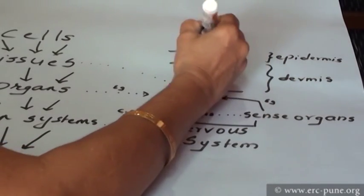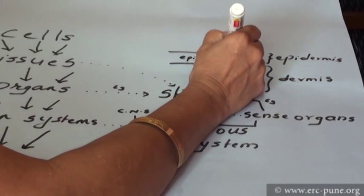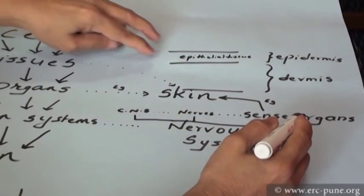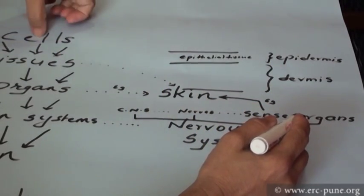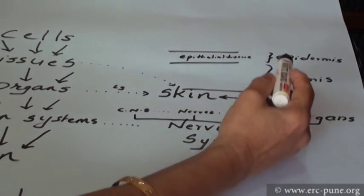This epidermis is made of epithelial tissue. There are about four or five layers like this, layers of cells. Now we see what a tissue is. It is made of cells. You can see it in the picture that we are going to show you side by side.